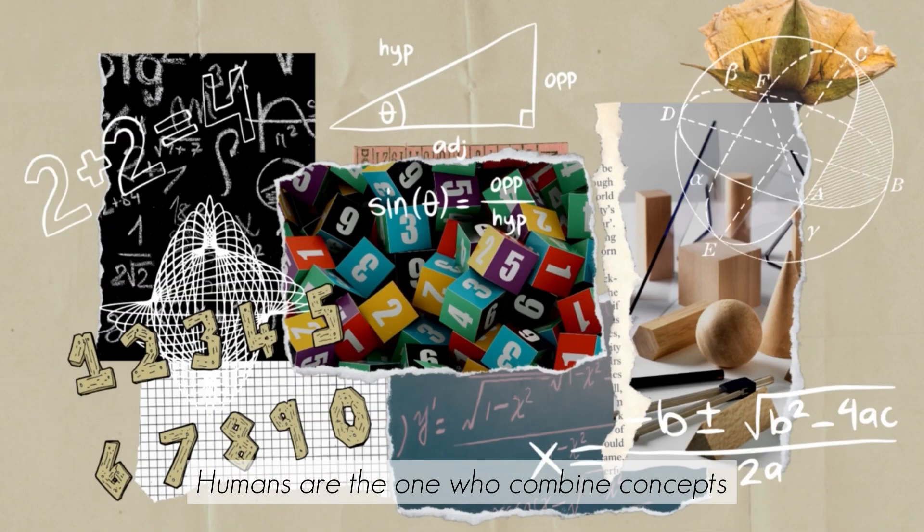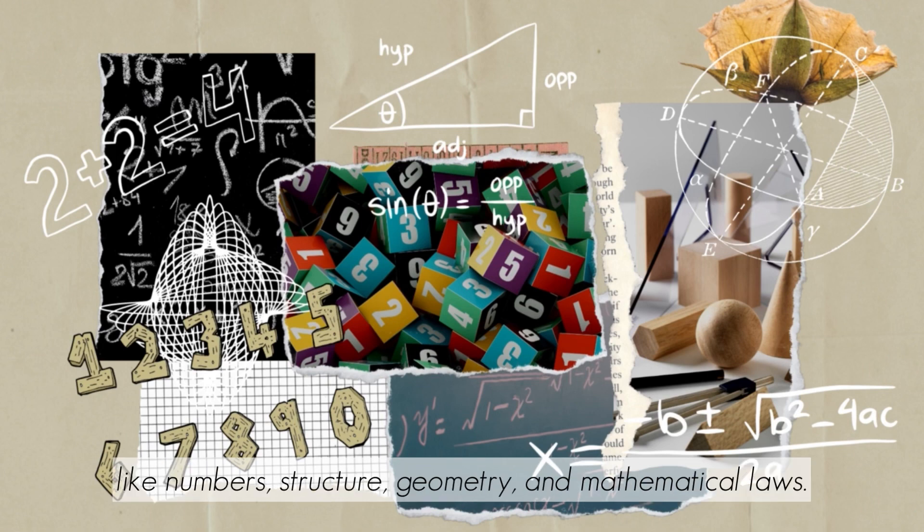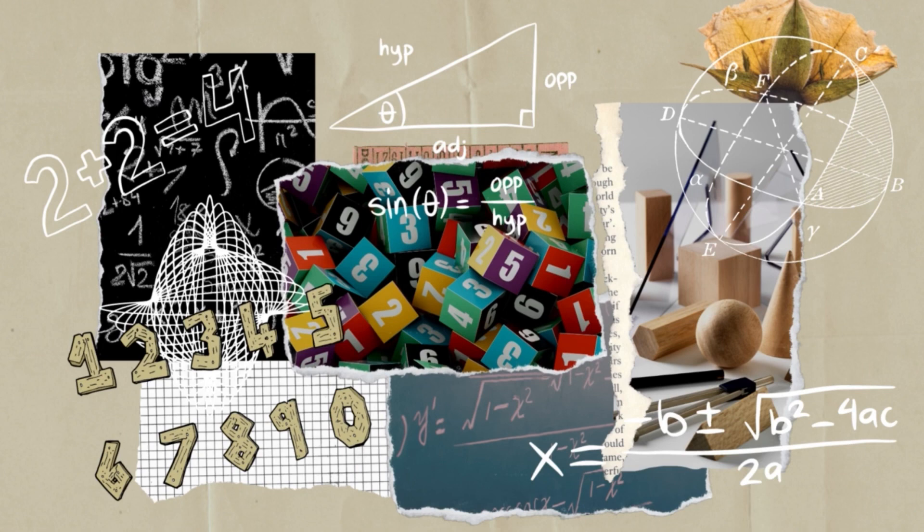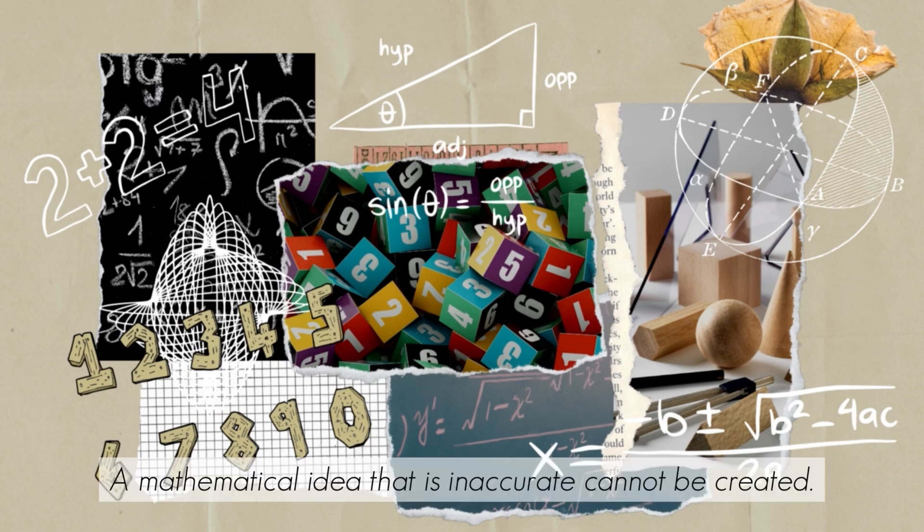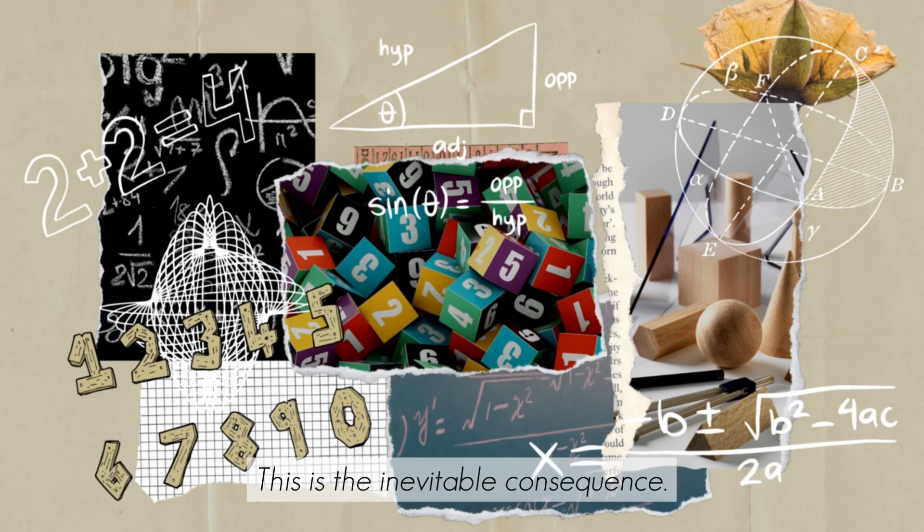Humans are the ones who combine concepts like numbers, structure, geometry, and mathematical laws. Thus, we claim that math is an invention. But these said concepts have always existed. A mathematical idea that is inaccurate cannot be created. This is the inevitable consequence.